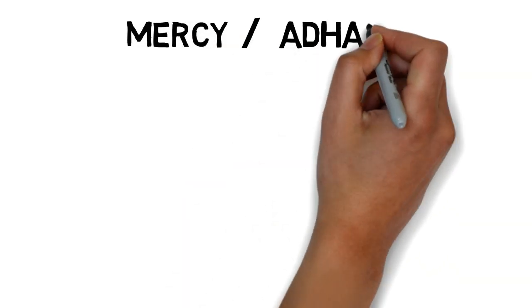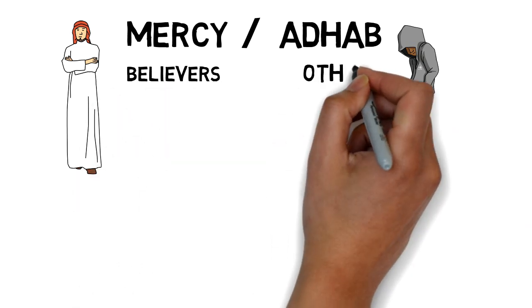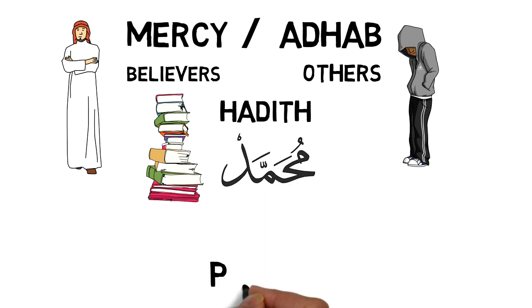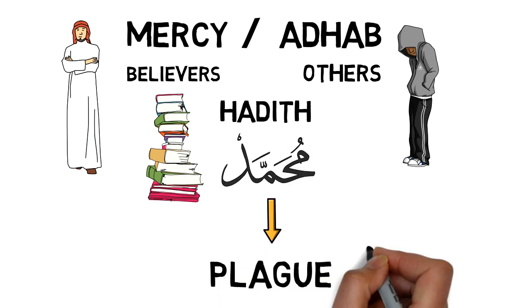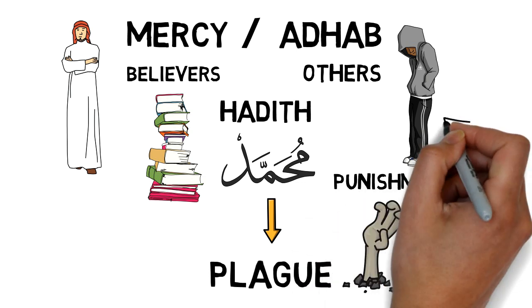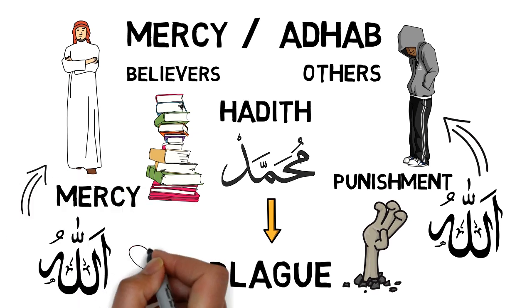Plagues are a mercy for the believers and a punishment unto others, and he mentions the famous hadith which is in Sahih Bukhari. The Prophet was asked about ta'oon, which is the Arabic word for plague, and the Prophet said that the ta'oon is an adhaab upon whomever Allah wants and it is a rahma that Allah has made for the believers.